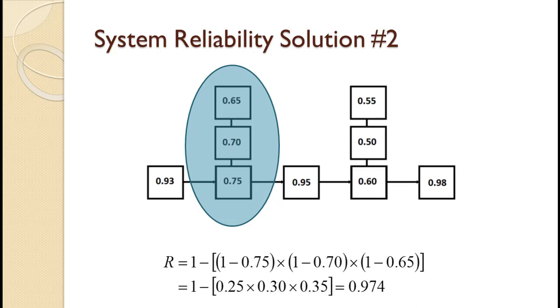Those calculations are shown on the slide and work out to be 0.974. We will treat the entire parallel system as one series component with 0.974 reliability.